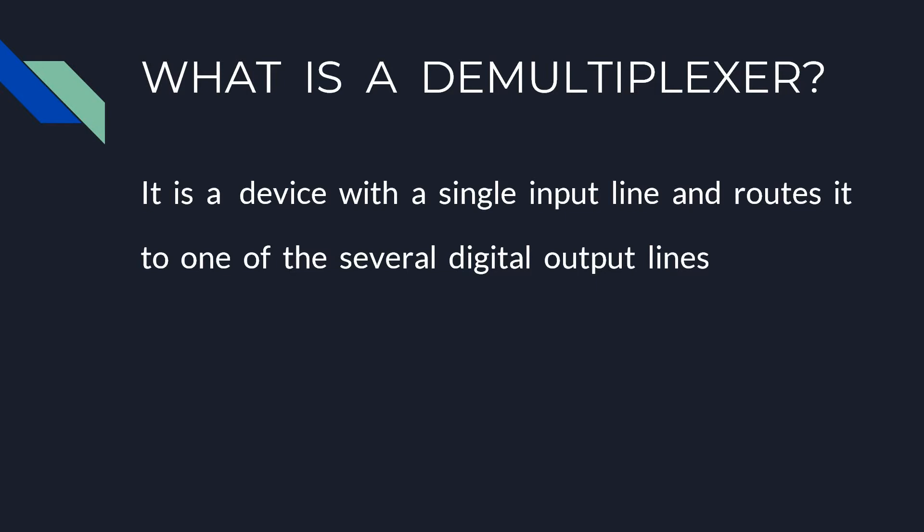One of the main components is if a demultiplexer has k selection lines, it's going to have 2^k output lines. Only one of the data outputs will be 1 at any given time, which one is determined by the value on the selection inputs.